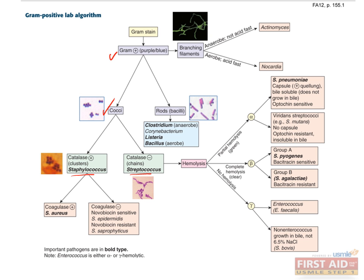What if the organism was purple-blue cocci in chains that are catalase-negative? You've identified streptococcus, but you need to determine which of the several important strep species you have. This is done by looking at hemolysis patterns.